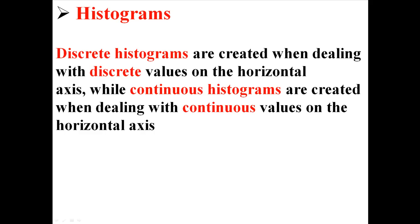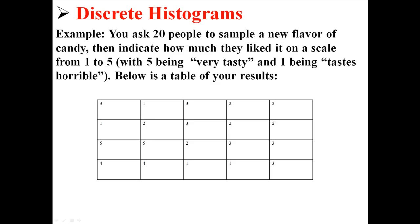Discrete histograms are created when dealing with discrete values on the horizontal axis, while continuous histograms are created when dealing with continuous values on the horizontal axis. First, we're going to create a discrete histogram.